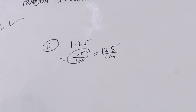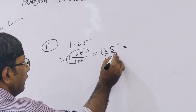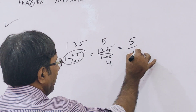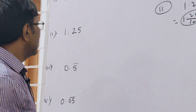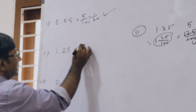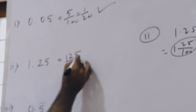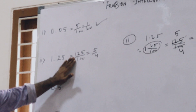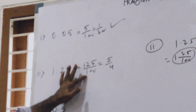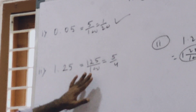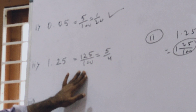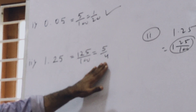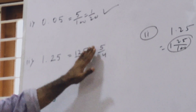But there is a common factor, so cancel it out. 25 goes into 100 four times and into 125 five times. So your correct answer is 5 by 4. That is, 1.25 can be written as 125/100 or simply 5/4.